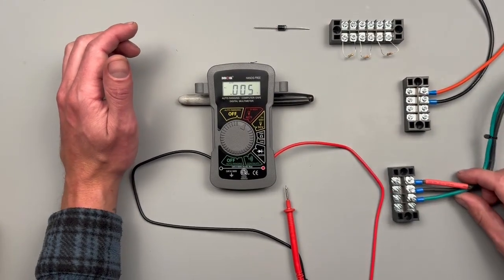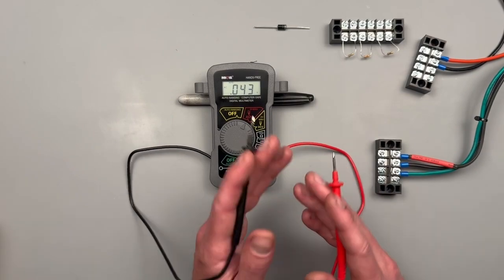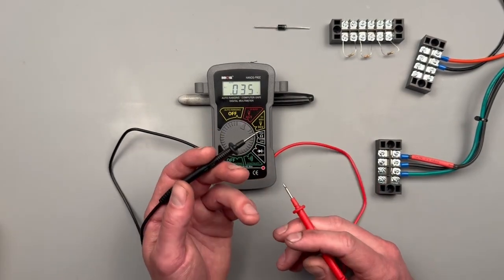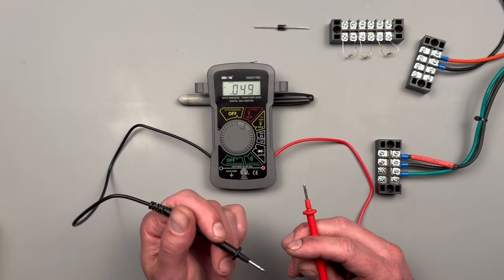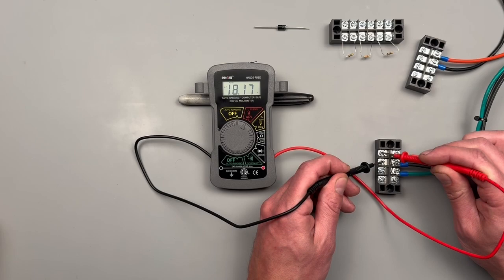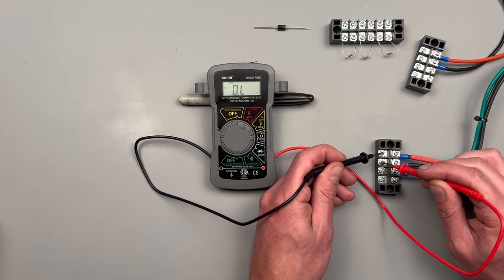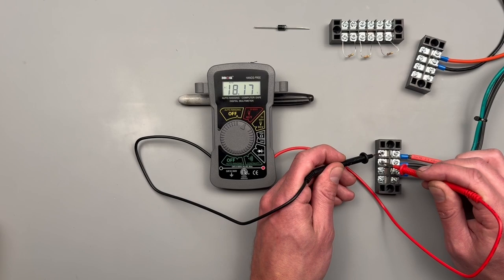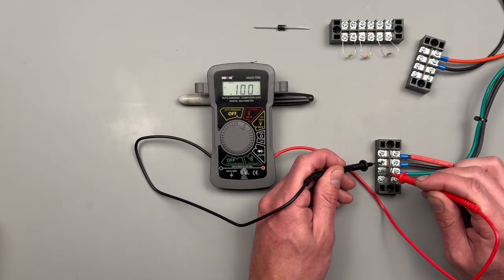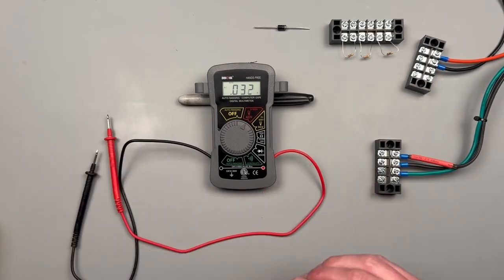We're going to start with volts AC. I've got an AC volt source here we can check. When checking AC power, the polarity of our leads doesn't matter because the current and voltage is flowing in both directions. We're coming back at 18.17 volts AC, and you can see it doesn't matter which lead goes where.